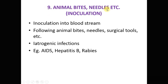Animal bites, needles, and surgical tools can also be sources of infection and the mode of transmission is inoculation — the direct inoculation of pathogen into the bloodstream. Infections caused by needles or surgical tools are called iatrogenic infections. Examples include rabies, which is transmitted by the bite of a rabid animal, and AIDS and hepatitis B, which can be transmitted through contaminated needles or surgical instruments.